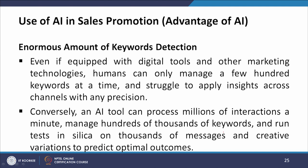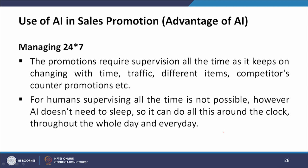Another advantage of using AI is enormous keyword management capability. Even if equipped with digital tools, humans can only manage a few hundred keywords at a time and struggle to apply insights across channels with any precision. Conversely, an AI tool can process millions of interactions per minute, manage hundreds of thousands of keywords, and run tests on thousands of messages and creative variations to predict optimal outcomes. AI can also manage campaigns 24 by 7. Promotion requires supervision at all times as it keeps changing with traffic, different items, competitors, and counter-promotions.